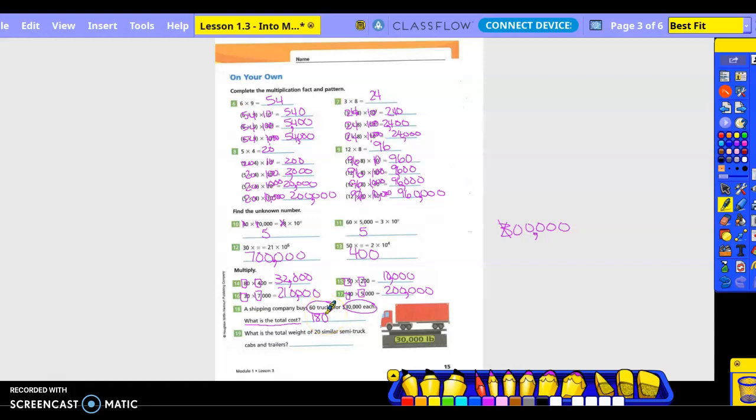One, five. And then come back three from the right, add in our commas, so it would be what? $1,800,000, right? Okay.